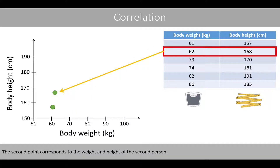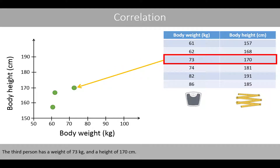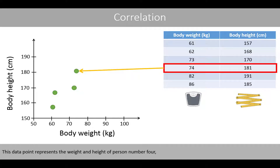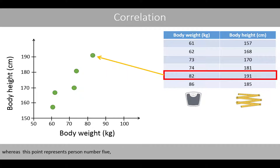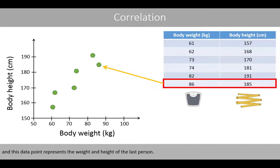The second data point corresponds to the weight and height of the second person. The third person has a weight of 73 kg and a height of 170 cm. This data point represents the weight and height of person number 4, whereas this data point represents person number 5, and this data point represents the weight and height of the last person.